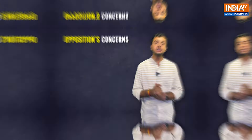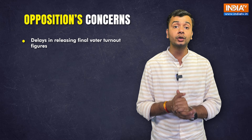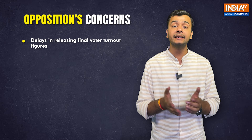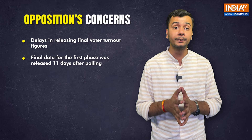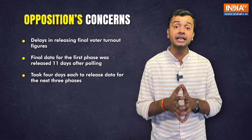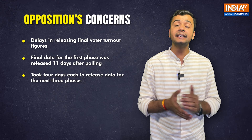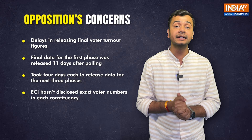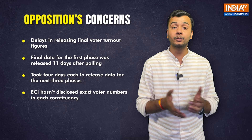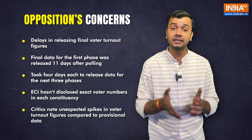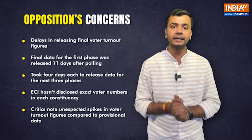Opposition leaders and activists are concerned about the delays in releasing the final voter turnout data. For example, the ECI shared the final figures 11 days after the first phase of polling on April 19, and took four days each to release data for the next three phases. Critics also highlight that the ECI hasn't disclosed the exact number of voters in each parliamentary constituency this time, and are worried about unexpected spikes in voter turnout figures compared to the provisional data released on polling day.